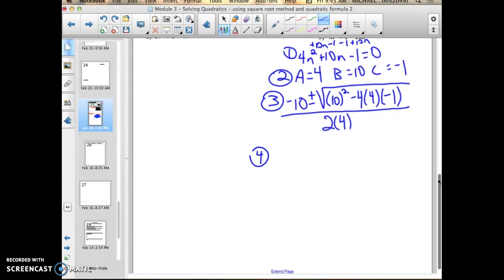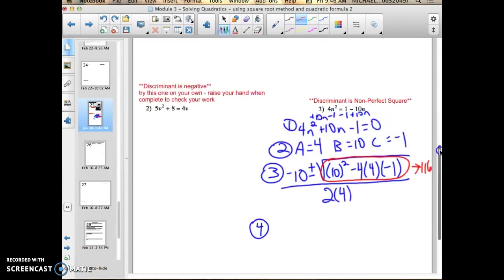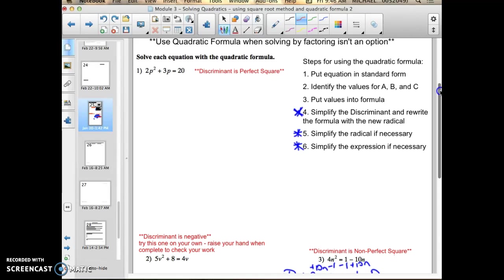Step 4, I'm going to simplify the discriminant that exists underneath the radical and then rewrite everything as it was. So step 4, this breaks down to 116. So I need to rewrite that then, and if you notice, this is the big difference. In question number 1, when I did step 4, the discriminant was a perfect square so it broke down to whole numbers.